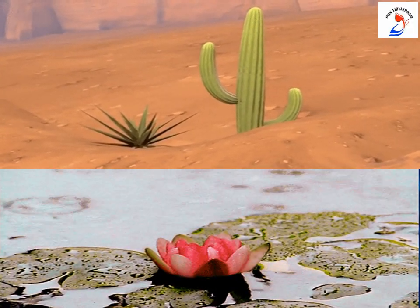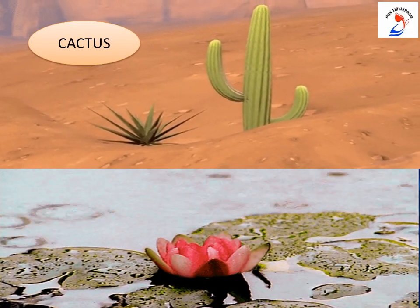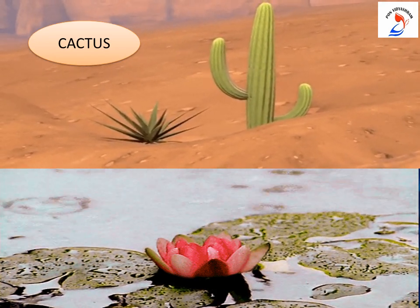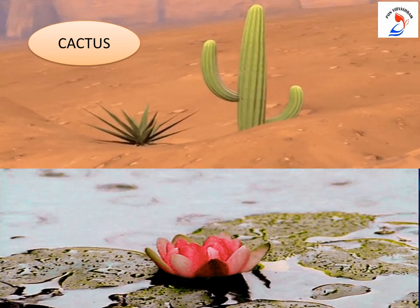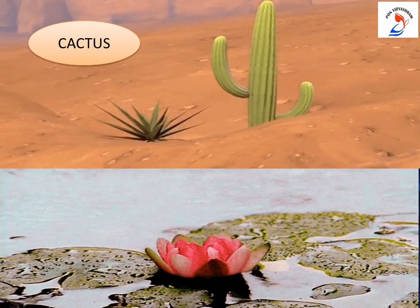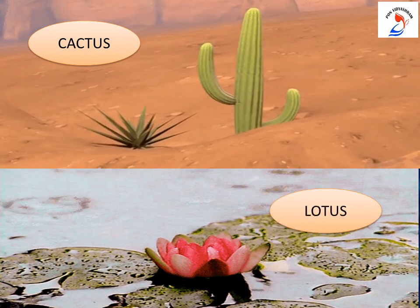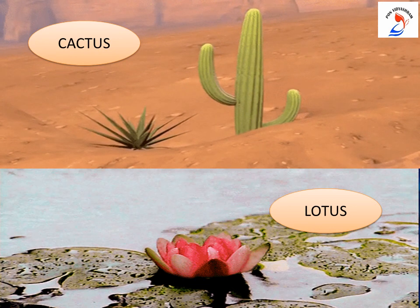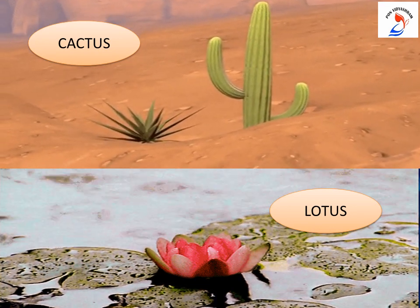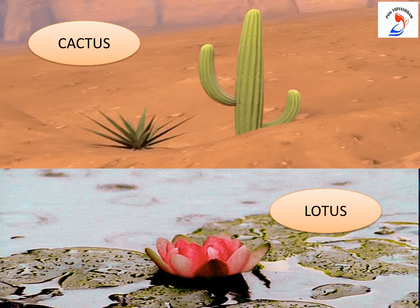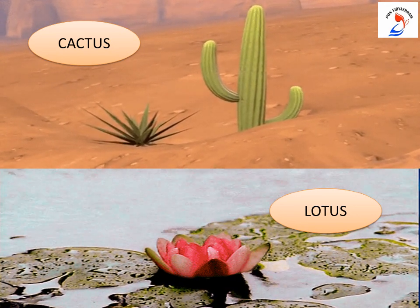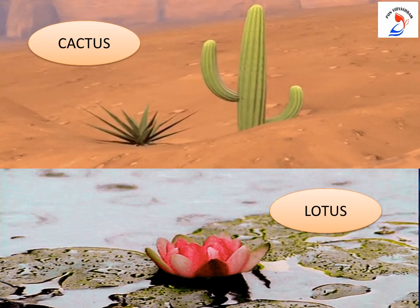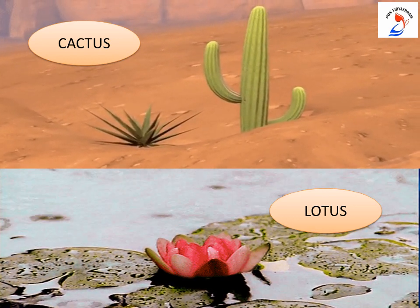Children, what do you see in the picture? You see a cactus plant. Now where does it mainly grow? In a desert where less water is available. The next picture is of a lotus plant which will always be in water — it is able to survive in water. So both plants have special features to survive in their habitat. These special features shown by a plant are called adaptations.